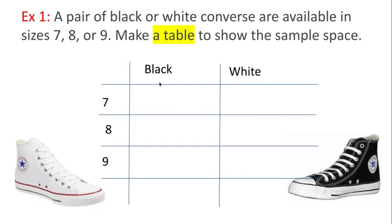So for this box, well it's in the black column and the row 7, so I'll write B7 for black Converse size 7. Then we have black Converse size 8 and black Converse size 9.